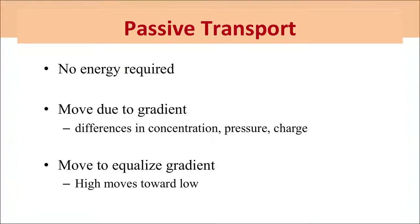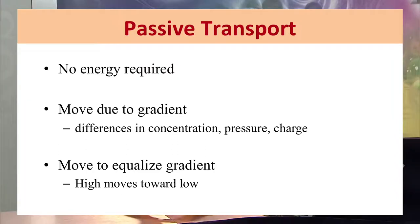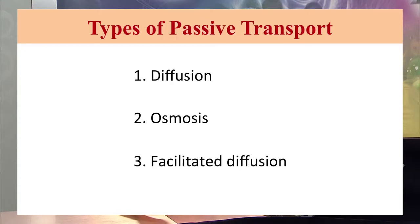First we will look at passive transport. Passive transport is the process where no energy is required and molecules move according to the gradient — that is, according to the difference in concentration, pressure, or charge. Molecules move to equalize the gradient, moving toward lower concentration until concentrations become equal throughout the solution. Passive transport is basically of three types: diffusion, osmosis, and facilitated diffusion.